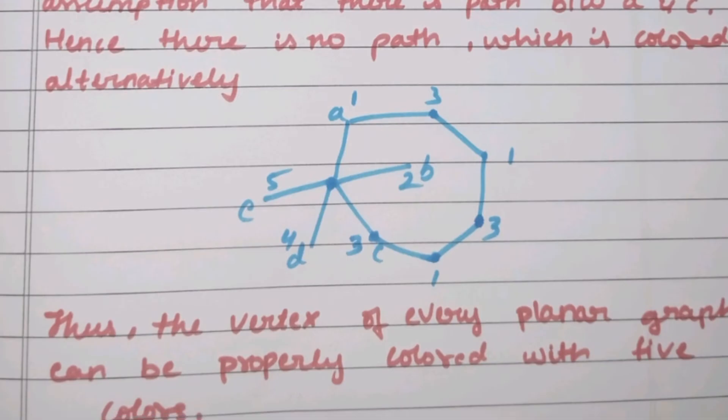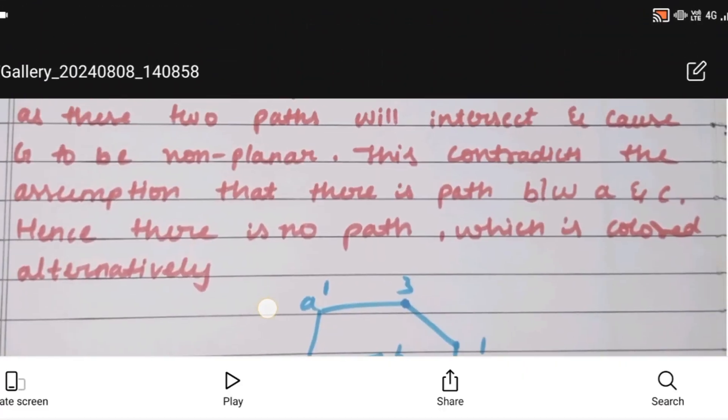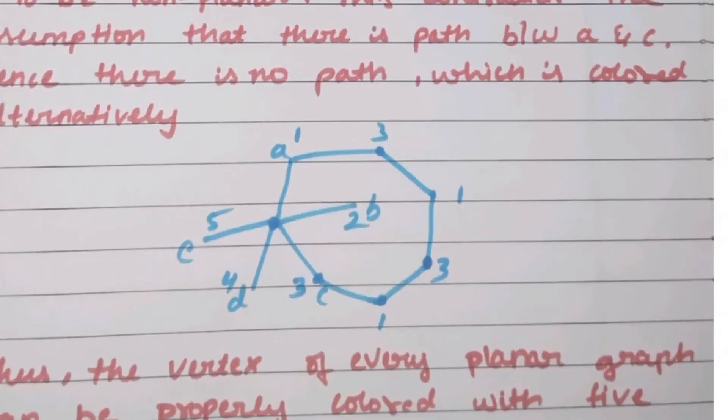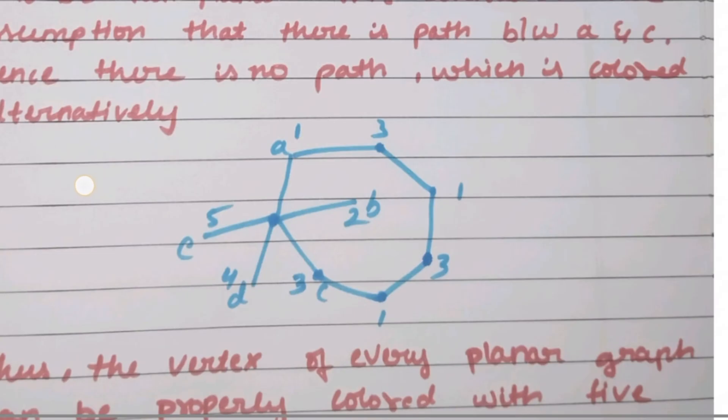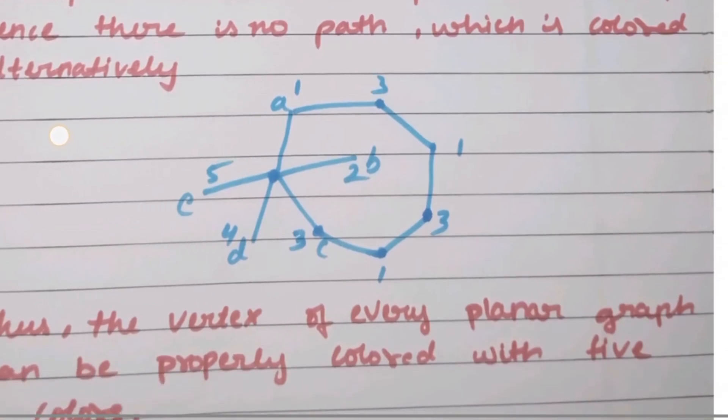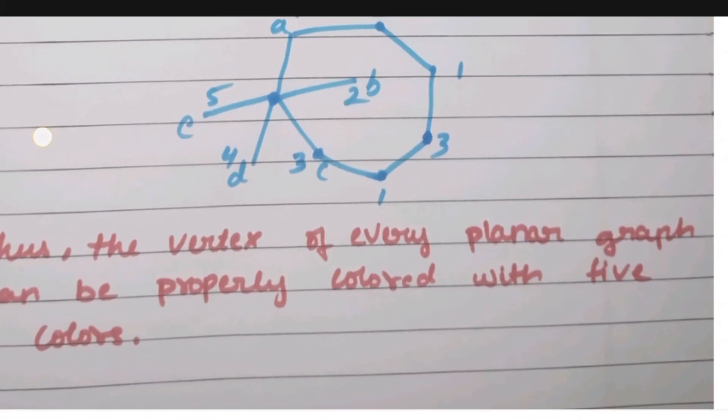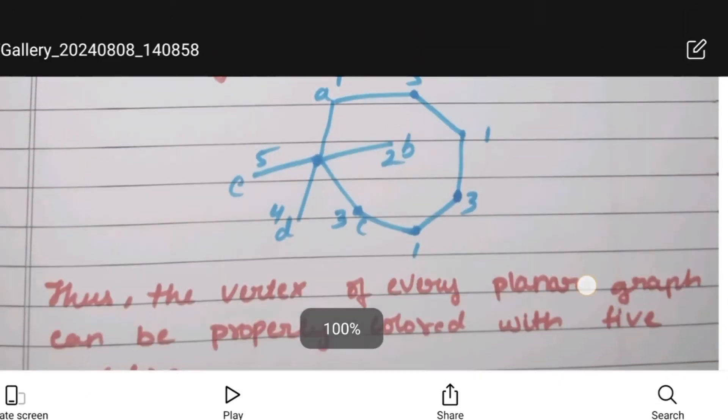Hence there is no path between A and C colored alternately. Therefore, we can recolor using alternating colors for other paths. Thus, the vertices of every planar graph can be properly colored with 5 colors.